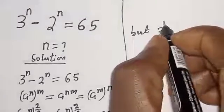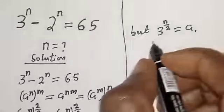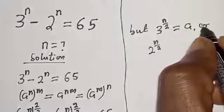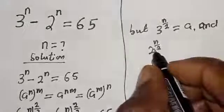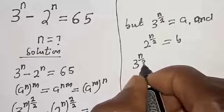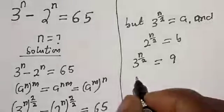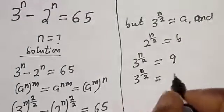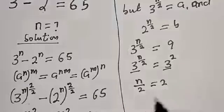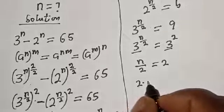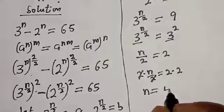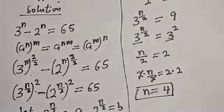Recall that 3 raised to power n over 2 equals a. Since a equals 9, we have 3 raised to power n over 2 equals 9, which is 3 squared. Using the same base rule, n over 2 equals 2. Multiplying both sides by 2, n is equal to 4. That is the value of n.